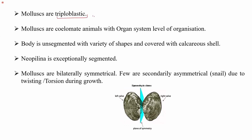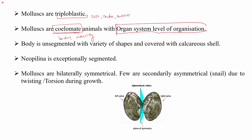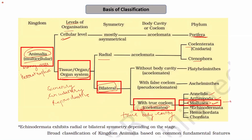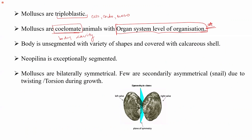Mollusks are triploblastic — they have all three germ layers: ectoderm, endoderm, and mesoderm. They are true coelomates with a true body cavity, and they have an organ system level of organization. If we remember the classification table, we can easily recall these characteristics: mollusks are triploblastic, coelomates, and have organ system level of organization.